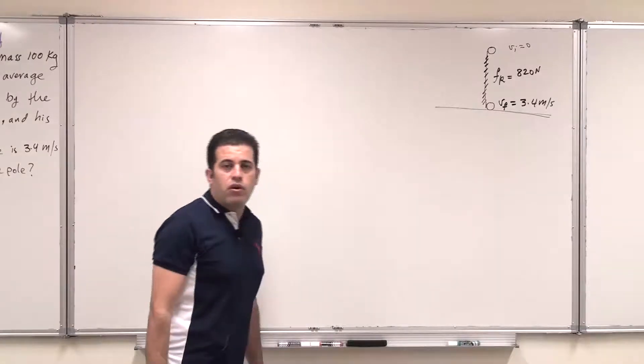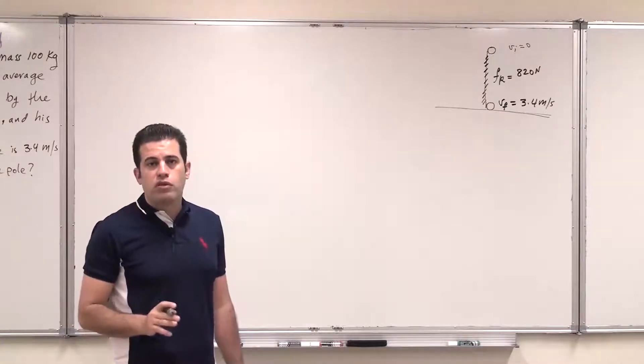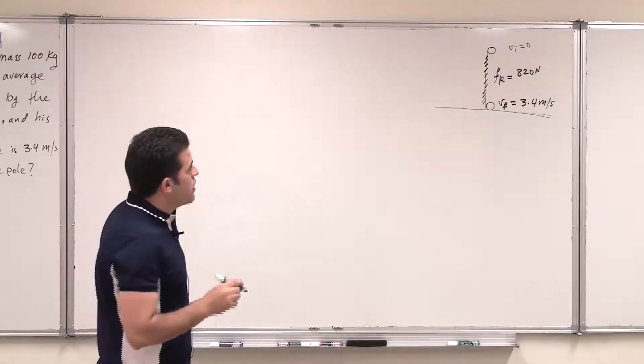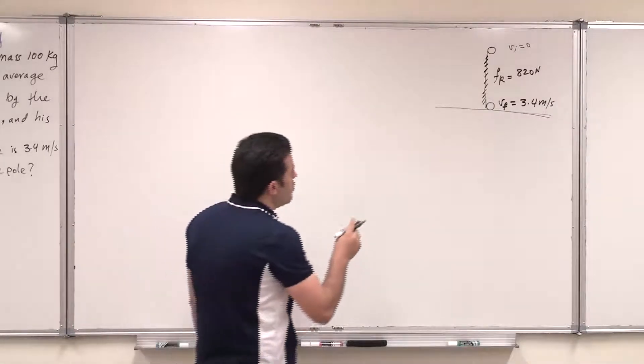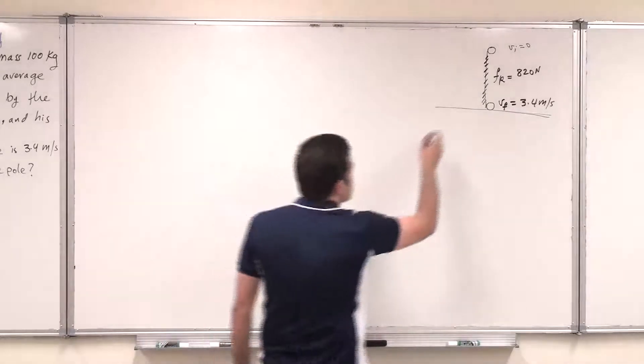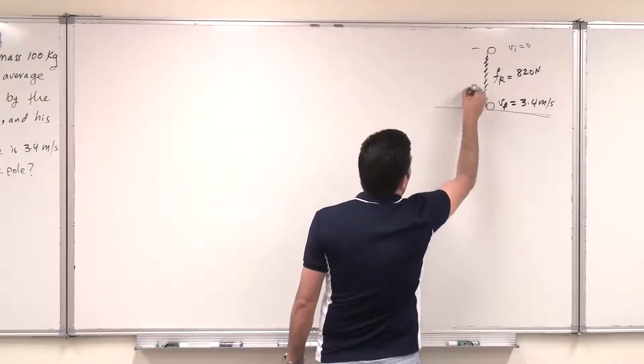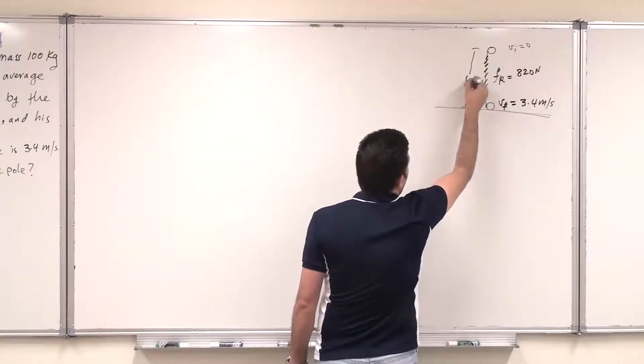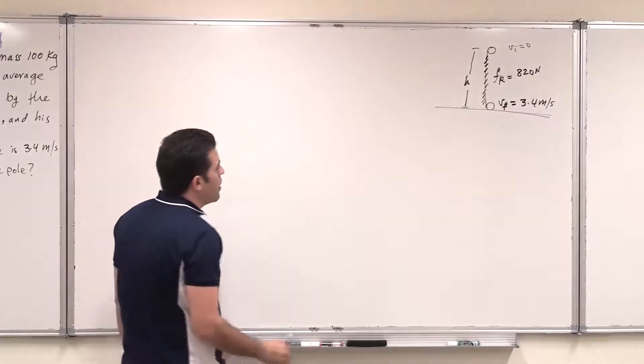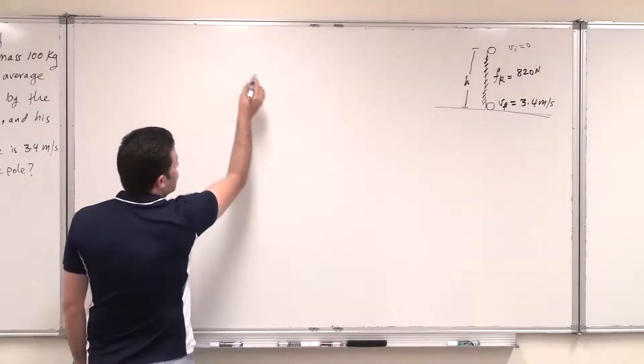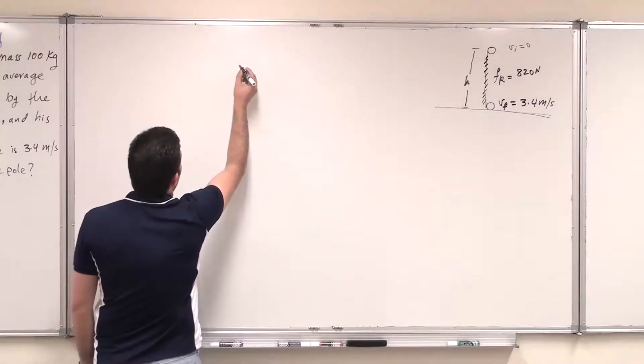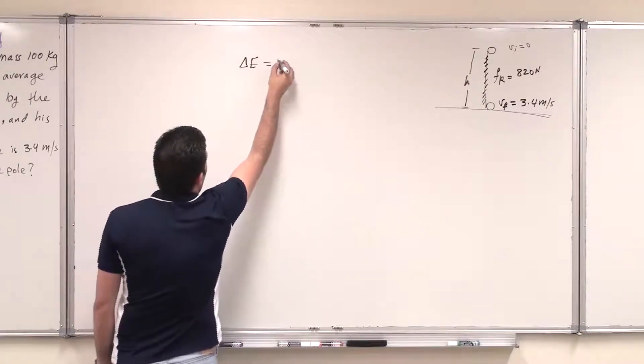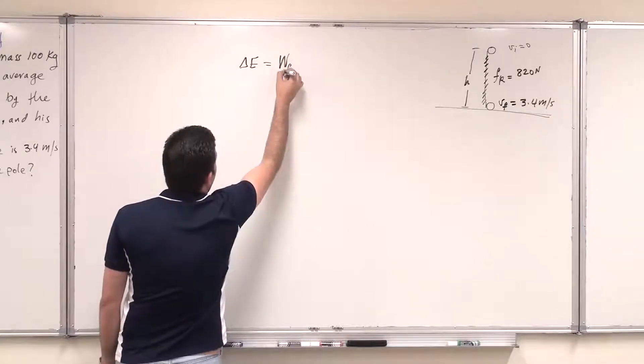Now this is an example of non-conservative forces because the force of friction is a non-conservative force. As a result, to find the distance that the man traveled from here to here, I need to apply the conservation of energy for non-conservative forces. So if I call this distance h, then according to the non-conservative force law of energy,